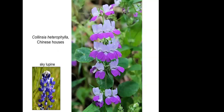The sky lupine and the Chinese houses superficially look alike but are in different families altogether. Chinese houses have really cool two-tone flowers, and lupines have two-tone flowers too. When the tips of the keel and banner are white, it signals to pollinators that it still needs to be pollinated. When the plant is done being pollinated, the tips turn lavender — telling the pollinator to be efficient and go where the white is instead.